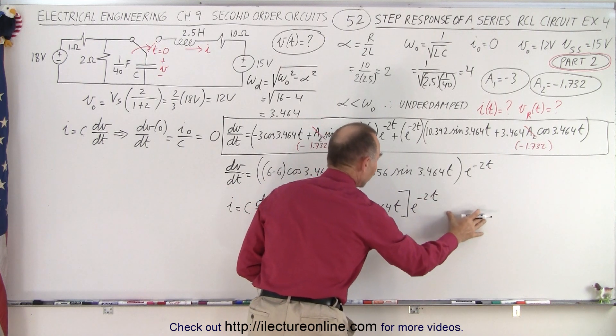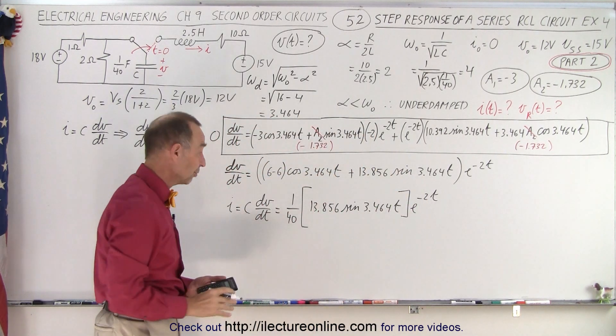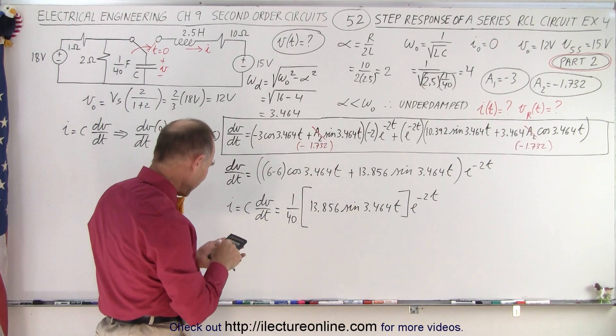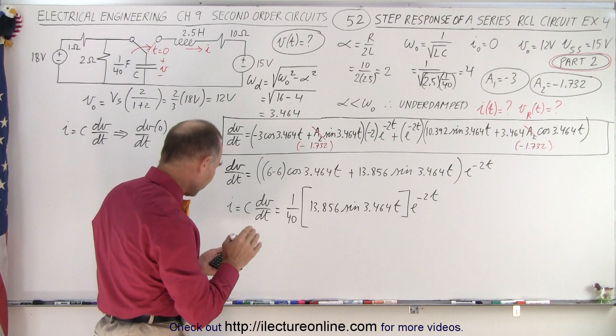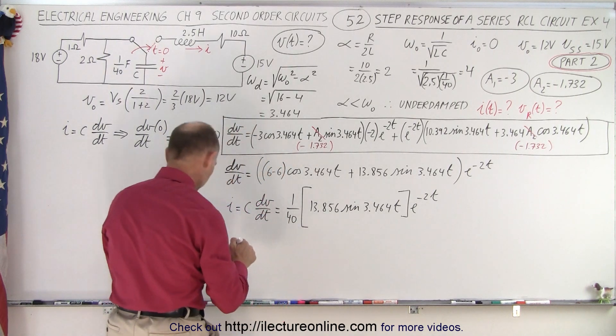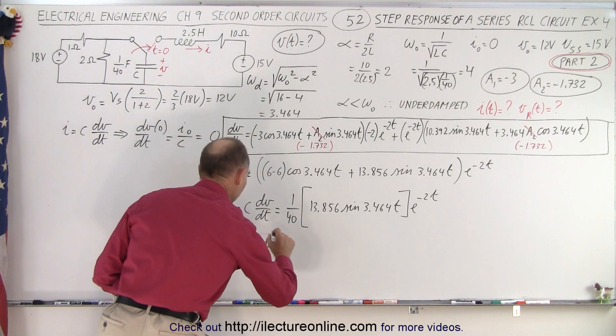13.856 times the sine of 3.464t multiplied by e to the minus 2t. Notice we don't have a constant term because we took the derivative, so the constant term dropped off. And we take that, divide it by 40, we get 0.3464.